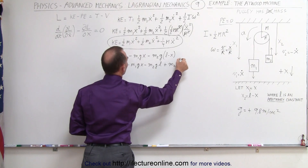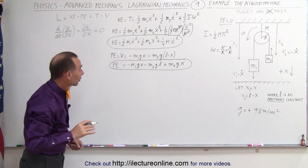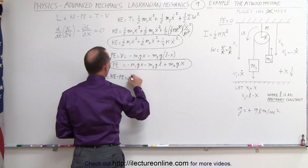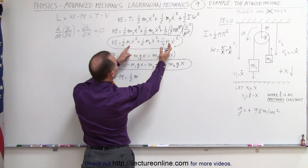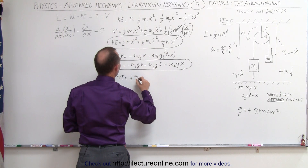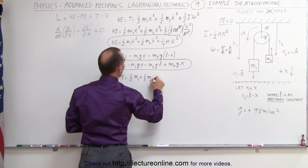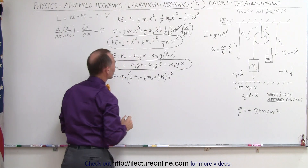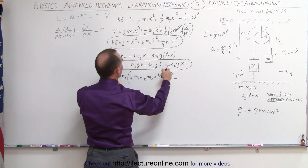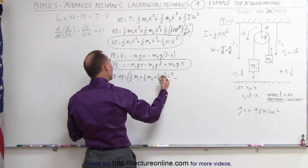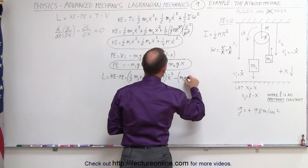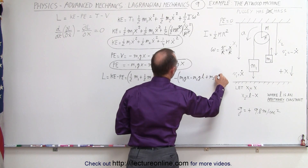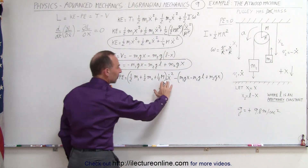Now we can write the Lagrangian because L is equal to the difference between the kinetic energy and the potential energy. We can pull out an x-dot squared: one-half m1 plus one-half m2 plus a quarter times the mass of the pulley, all multiplied times x-dot squared. Then minus the potential energy — that's m1 g x minus m2 g l plus m2 g x. When you work with the Lagrangian, you always have to be very careful about the signs.